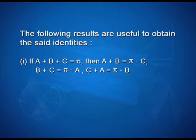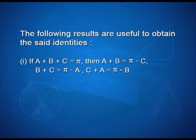The following results are useful to obtain these identities. First, if A plus B plus C is equal to pi, then A plus B is equal to pi minus C, B plus C is equal to pi minus A, and C plus A is equal to pi minus B.